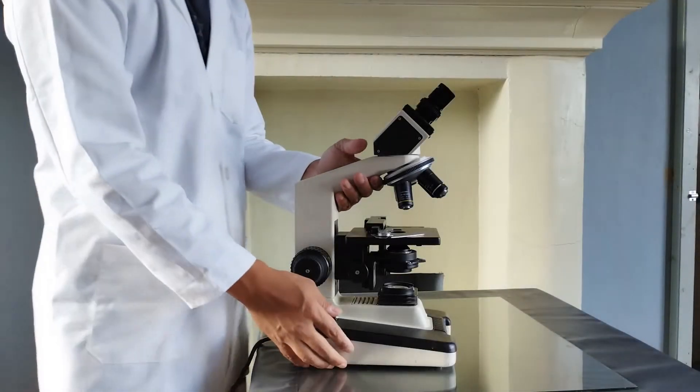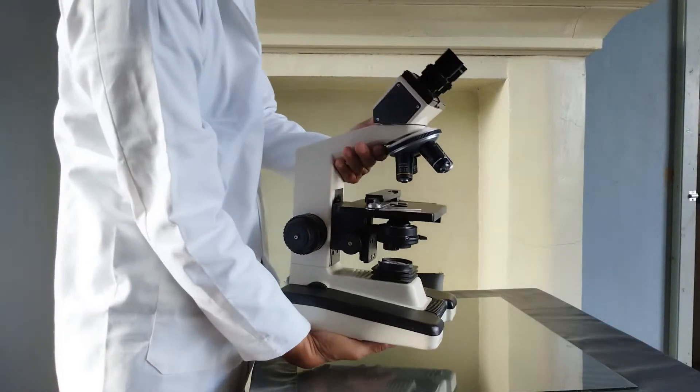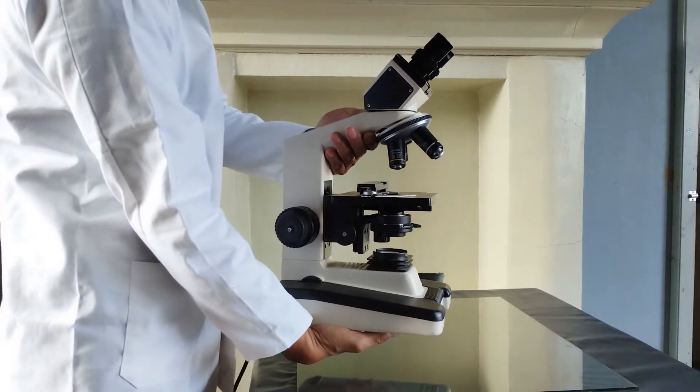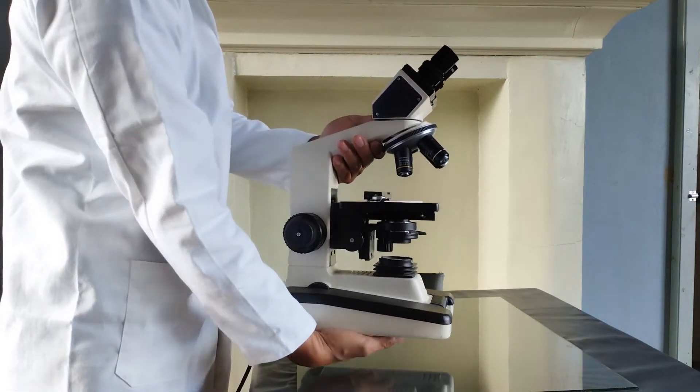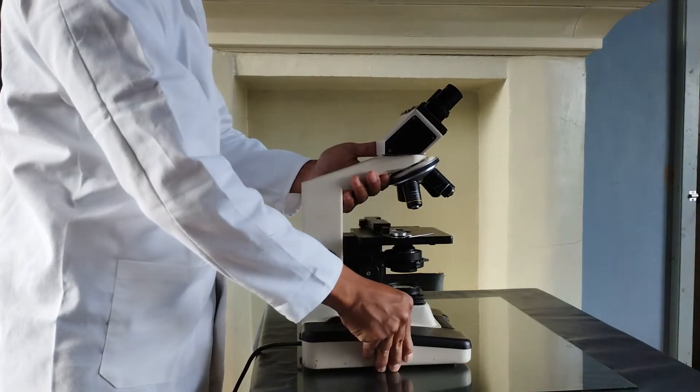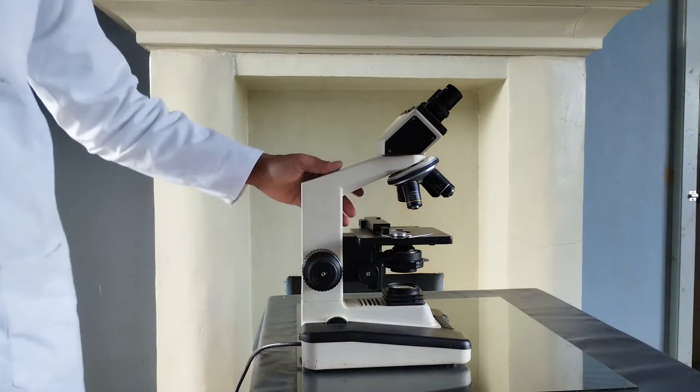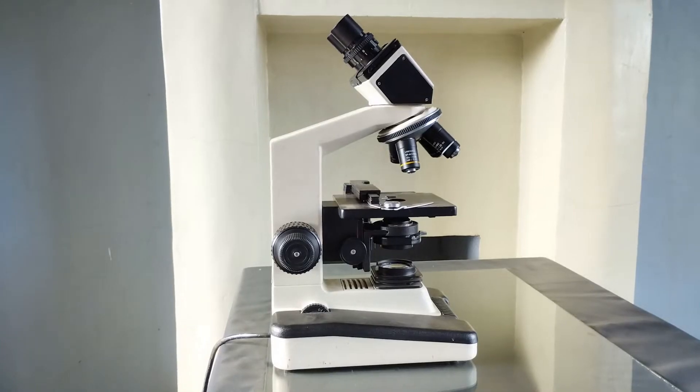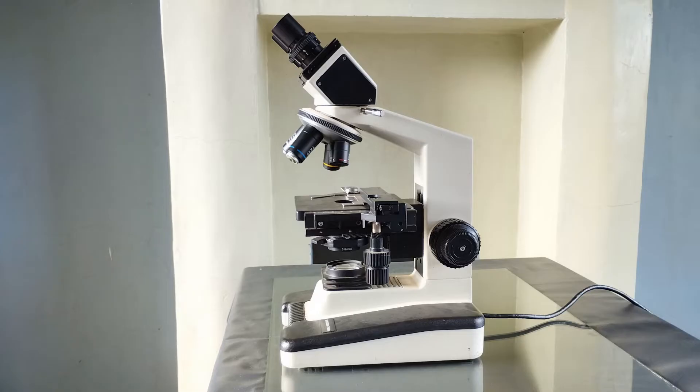Once you remove the microscope from its box, bring it to the working table by holding it with both hands, one hand firmly holding the arm of the microscope and the other hand supporting the base of the microscope. Safely position the microscope on the table such that the base of the microscope is at least three inches away from the edge of the working table. The microscope may be placed in either this position with the arm towards the user or this position with the arm away from the user.